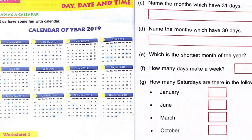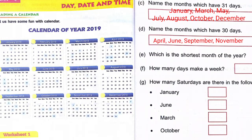(c) Name the months which have 31 days. The months with 31 days are: January, March, May, July, August, October, and December. (d) Name the months which have 30 days. They are: April, June, September, and November.